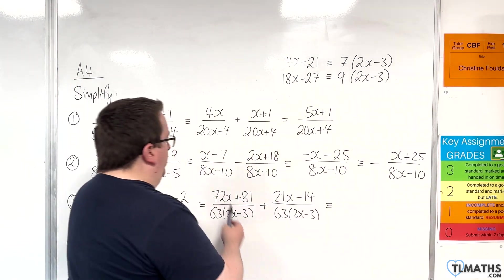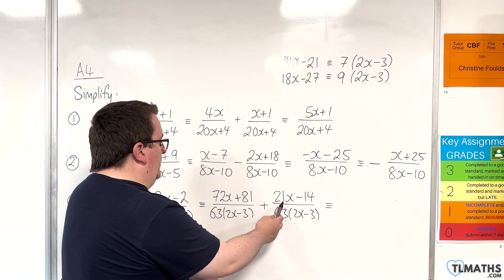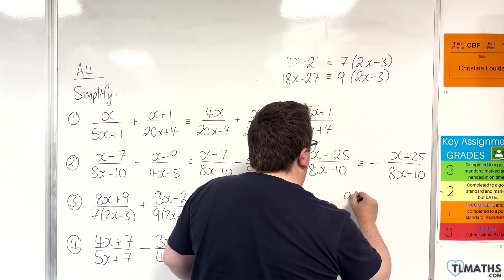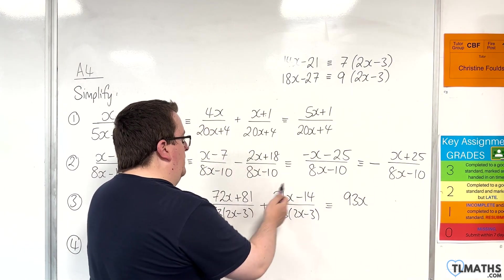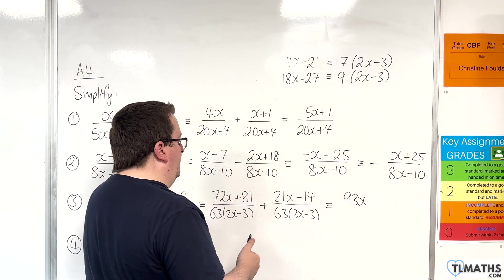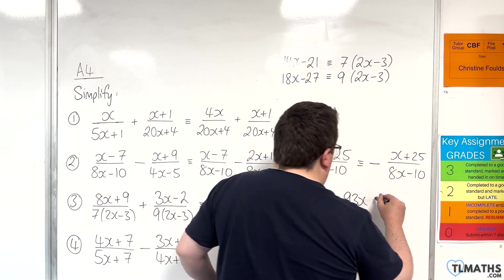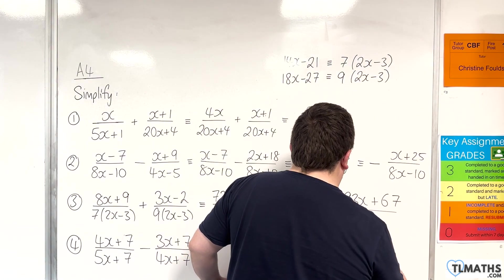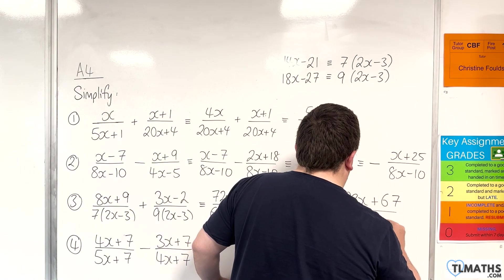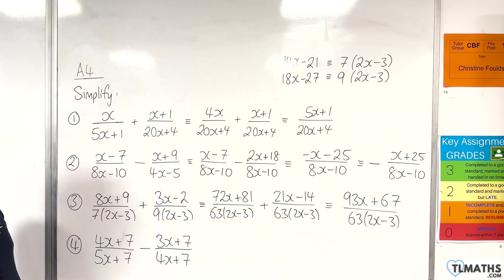Adding the numerators: 72x plus 21x is 93x, and 81 take away 14 is 67. So the answer is 93x plus 67 over 63(2x take away 3).